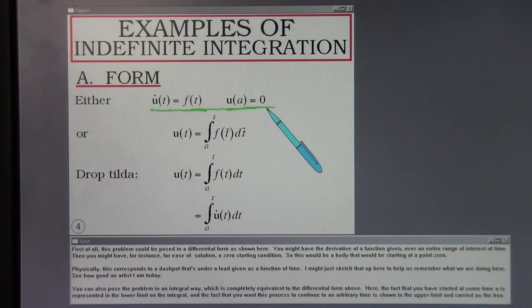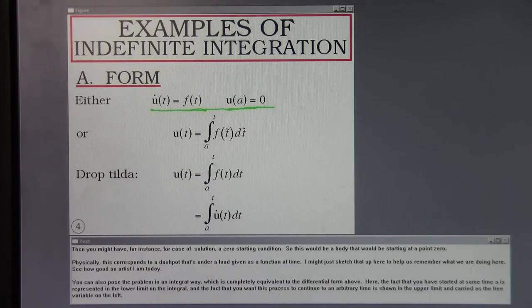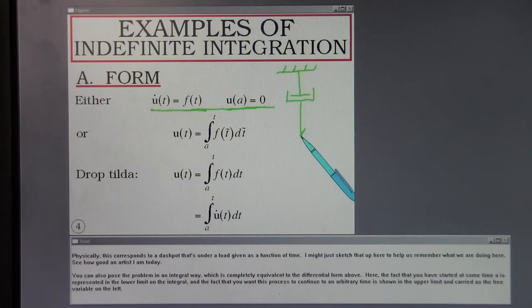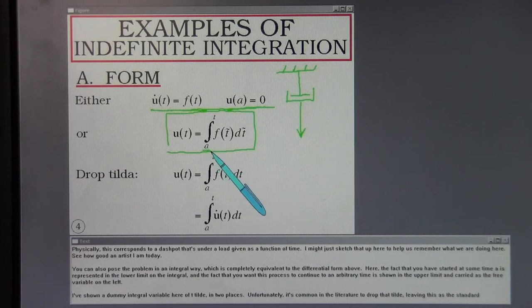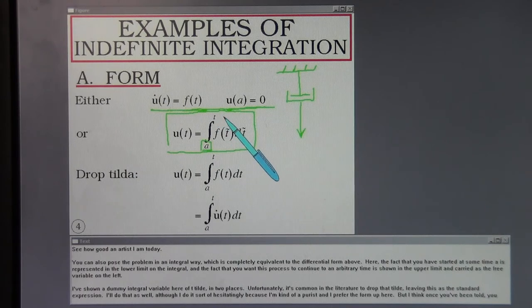You might have the derivative of a function given over an entire range of interest of time. And then you might have a zero starting condition. So this would be a body that would be starting at a point zero. Physically, this corresponds to a dashpot under a load that's given as a function of time.